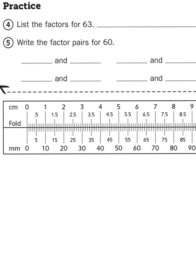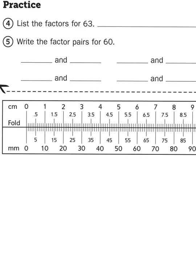If you notice, for every one centimeter, you get 10 millimeters. If you look right here, one centimeter is worth 10 millimeters. Four centimeters would be worth 40 millimeters. So you're just skip counting by 10 to see how many millimeters you have.